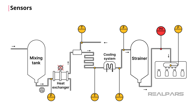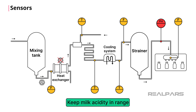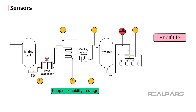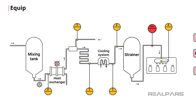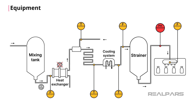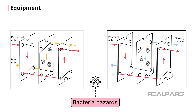pH sensors help the control system maintain the milk's acidity levels within acceptable ranges, thereby improving shelf life, consistency, and flavor. Equipment also plays a vital role in milk production. Plate and frame heat exchangers are commonly used in milk production for heating, as described with the HTST, and for cooling. They consist of multiple thin separated plates, and enable the milk to be spread out and to heat or cool uniformly and at the same rate.